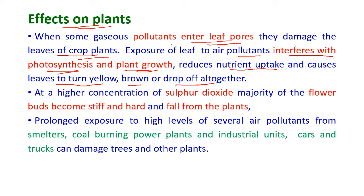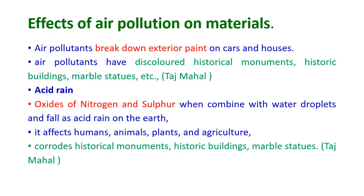At higher concentrations of sulfur dioxide, the majority of flower buds become stiff and hard and fall from the plants before flowering. Prolonged exposure to high levels of air pollutants from smelters, coal-burning power plants, industrial units, cars and trucks can also damage trees and other plants.